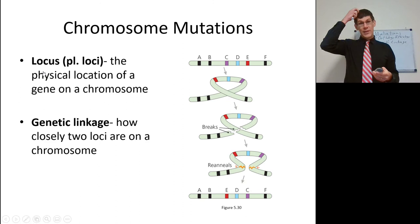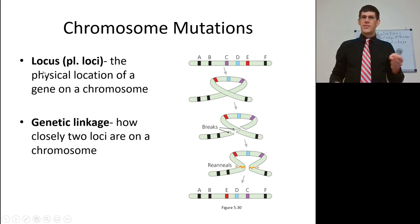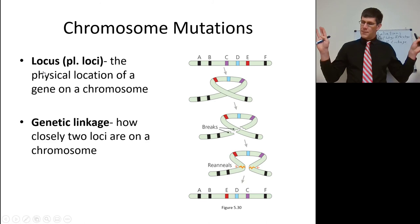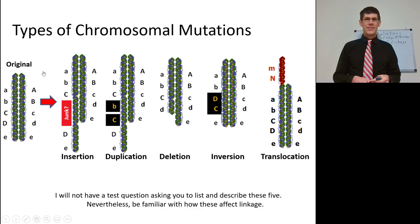Here we have a chromosome where A and B are close to one another — they are tightly linked. Tightly linked means crossover events are uncommon between those two genes. There is also the possibility of a chromosomal inversion where a segment like CDE bends around itself, breaks and re-anneals, resulting in EDC — the genes switch order, changing linkage.